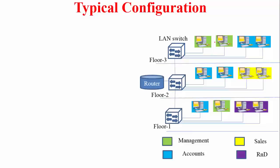This is how a typical configuration looks in a building. There are multiple computers on each floor, hooked up via a switch. These switches are interconnected, and a router connects to one of them to provide internet access. In an office building, computers belong to different departments: green for management, blue for accounts, yellow for sales, and purple for R&D.